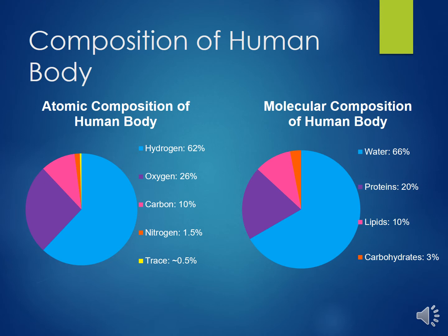The molecular composition of the human body can be seen on the right. Water is found in the largest percentage, followed by proteins, then lipids, and finally carbohydrates.